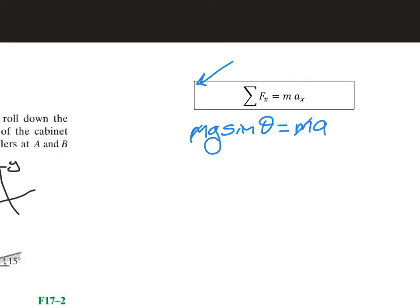Well, pretty standard stuff, A is just G sine theta, and when we put in 9.81, and when we put in 15 degrees, we get that the acceleration is 2.539. And that's meters per second squared.